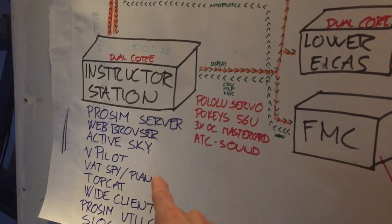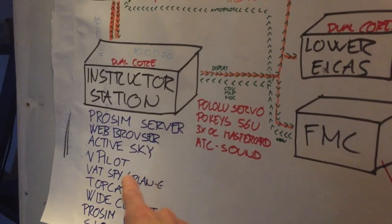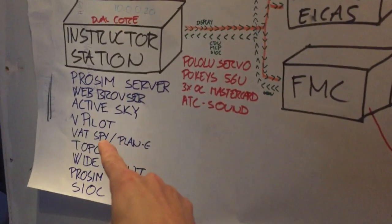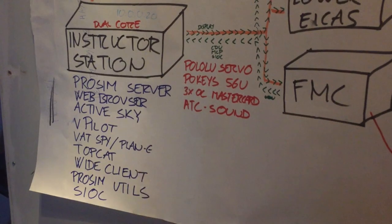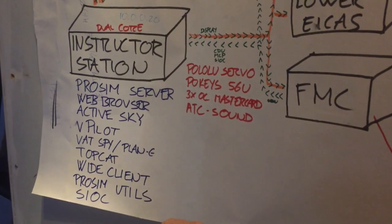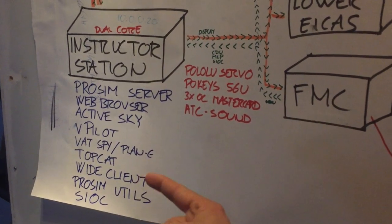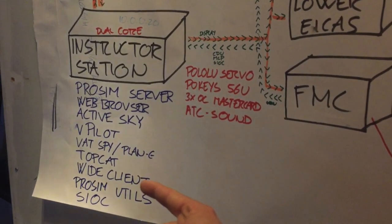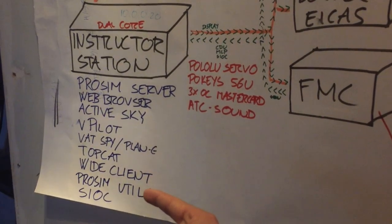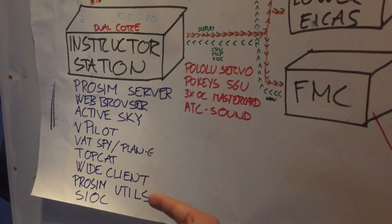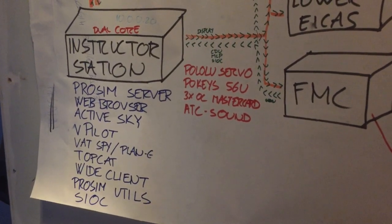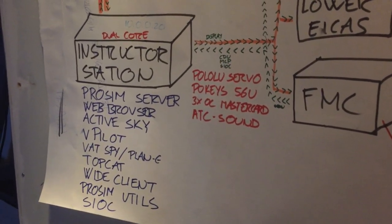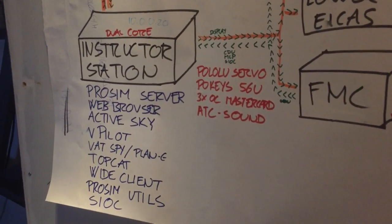Plan-G — or G-Plan, I can't remember — shows your aircraft on a map. Topcat for weight and performance calculations. WideClient connects to Flight Simulator. ProSim Utilities is a program that allows you to do a whole lot of things with the CDU.